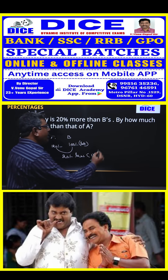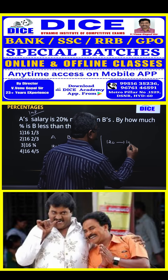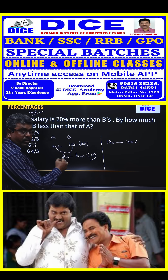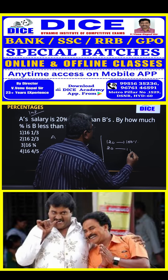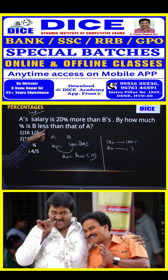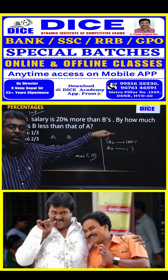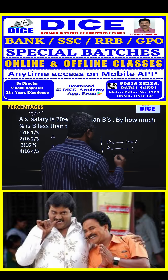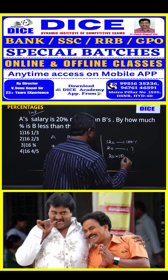If A is 120 and that equals 100 percent, then how much percent is B less? The question asks: by how much percent is B less than A? So we do cross multiplication: 20 into 100, divided by 120.